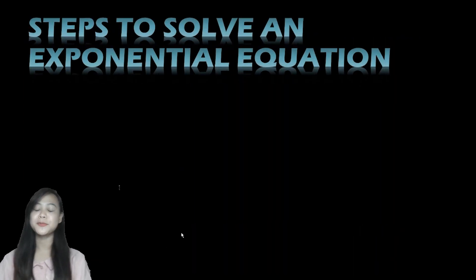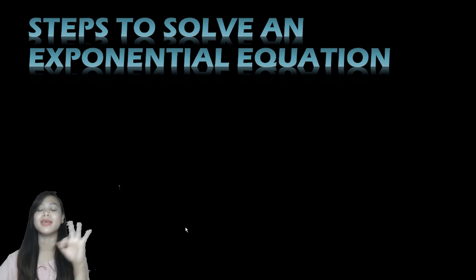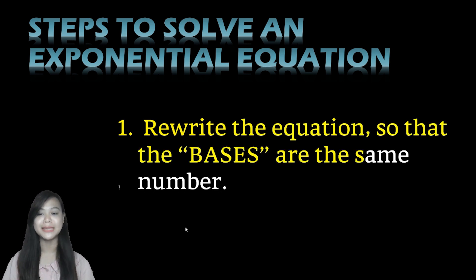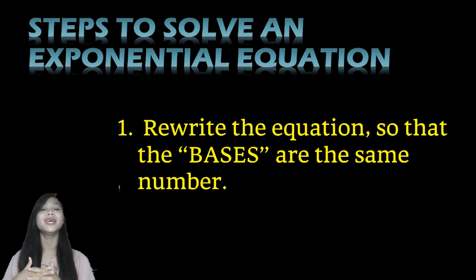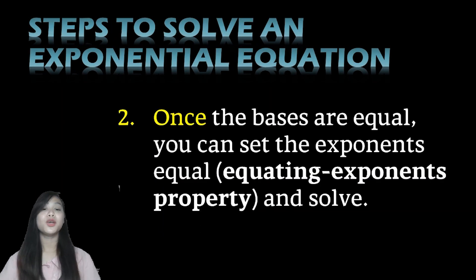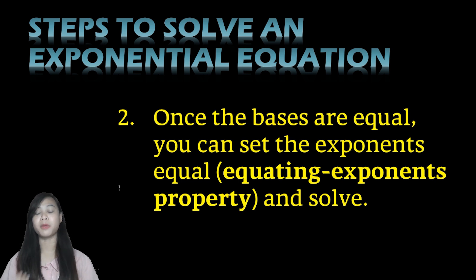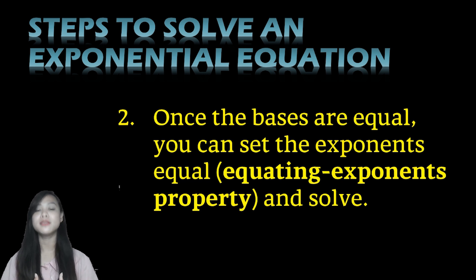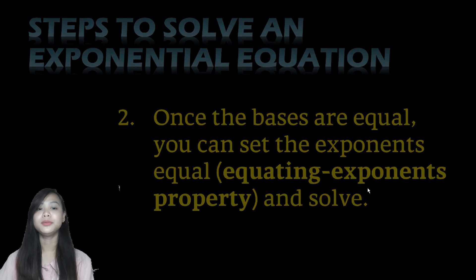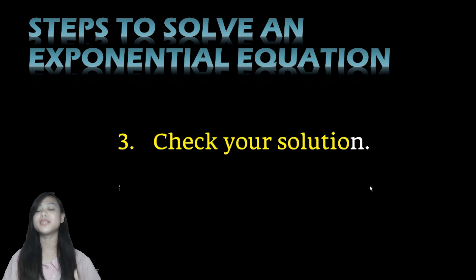Here are the three steps to solve an exponential equation. First, rewrite the equation so that the bases are the same number — this relates to the Equating Exponents Property, so we need to make sure both sides of the equation have the same base. Second, once the bases are equal, set the exponents equal using the Equating Exponents Property, and solve for x.